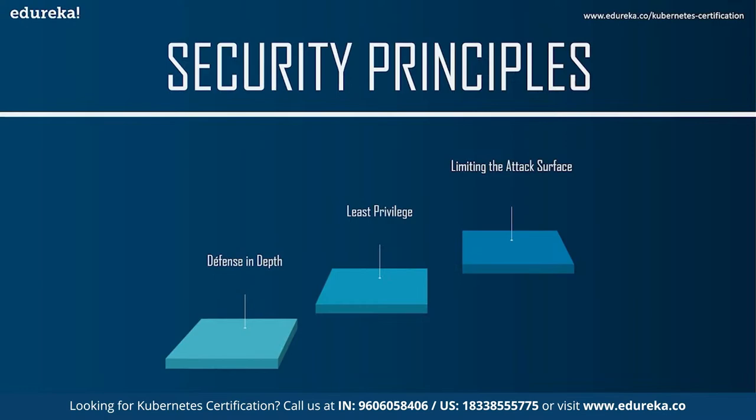If that microservice is compromised or has a bug, it cannot override product information or extract user data, because it has only read access or no access at all. Applying least privilege makes it more difficult for an attacker to cause damage. The same principle applies to humans: in some organizations only a small set of people should have access to sensitive information such as medical or financial records.